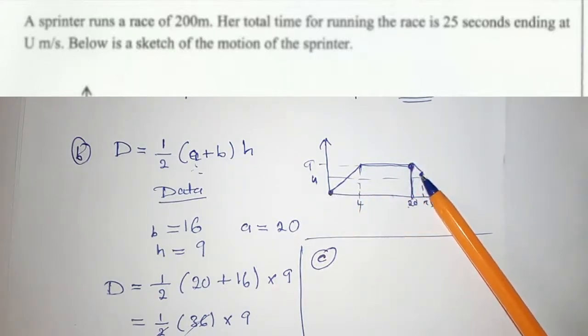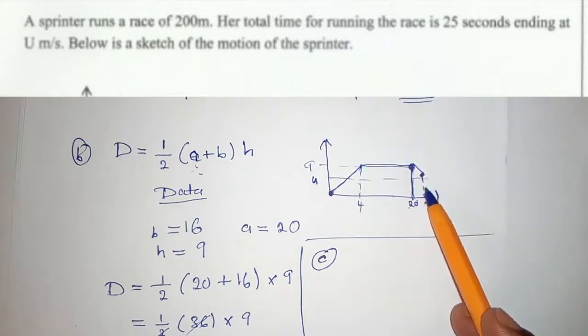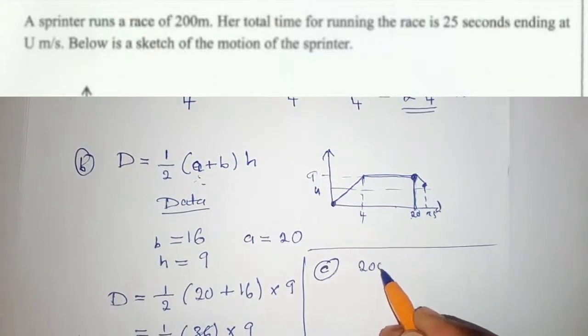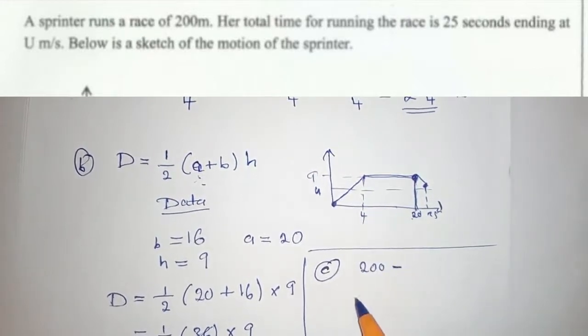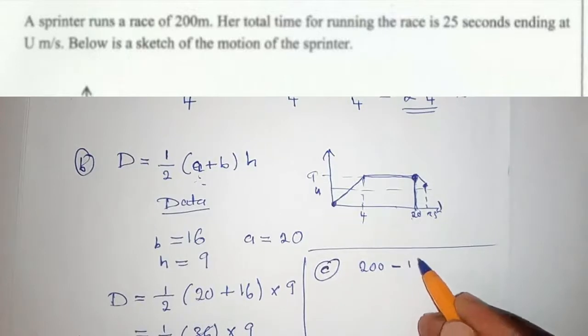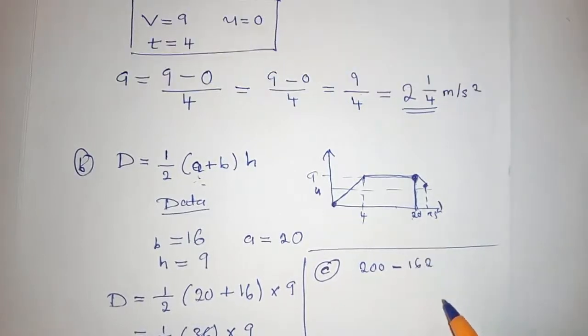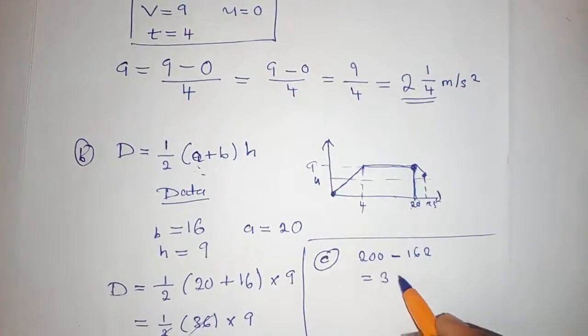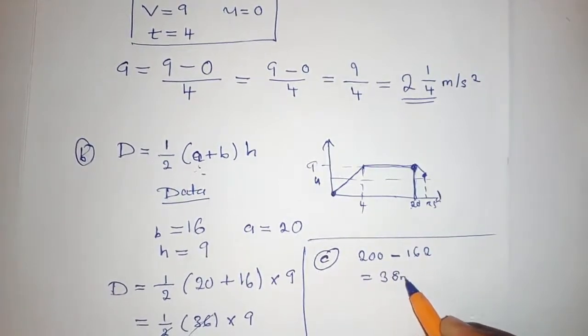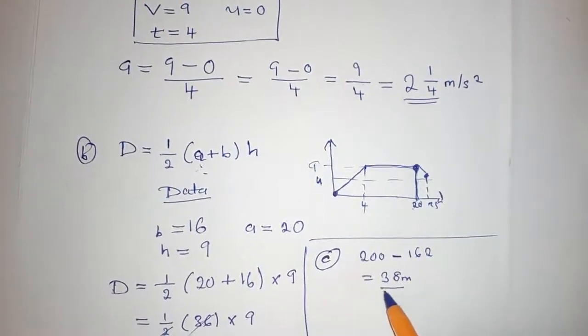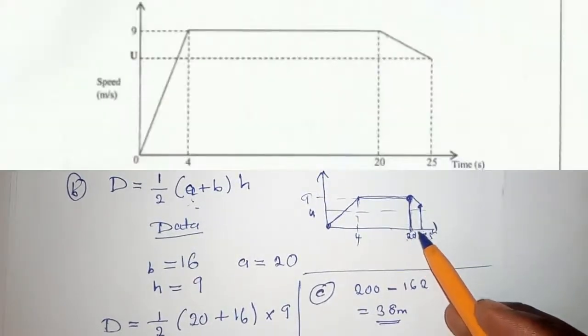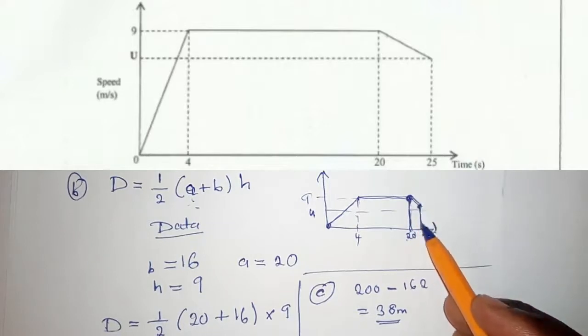they covered 200 meters total. So we use 200 meters minus 162. When we say 200 minus 162, we find 38 meters. So this 38 meters is the distance for the last 5 seconds, this part here.